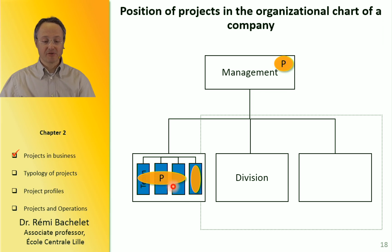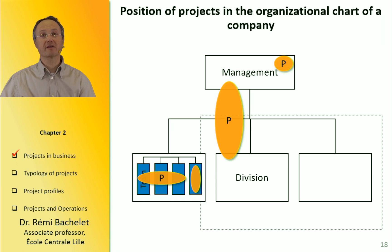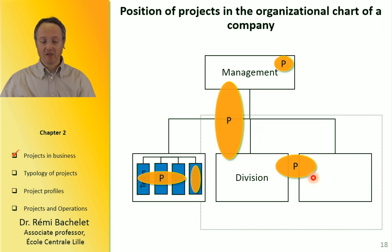But you have other kinds of projects. For example, in some cases the teams must work together, or sometimes a project can involve both the management of the company and one of the divisions. This is called a transversal project, and of course this project can be located between different branches of the company.